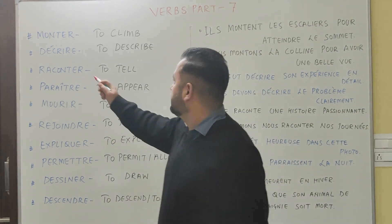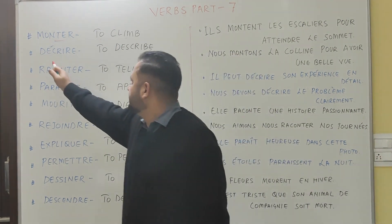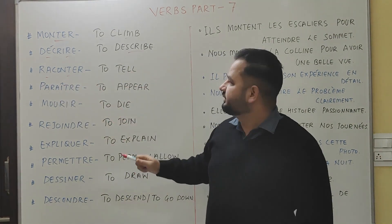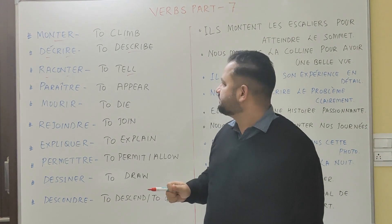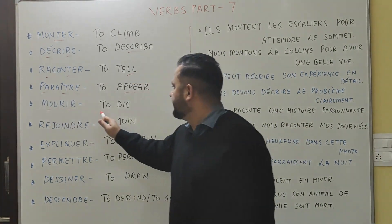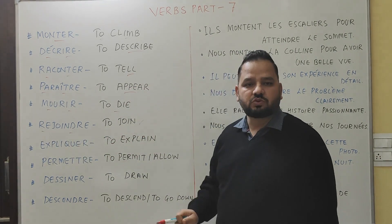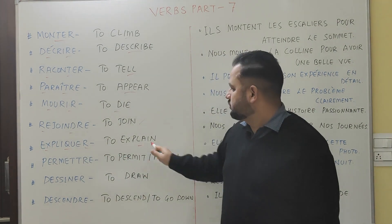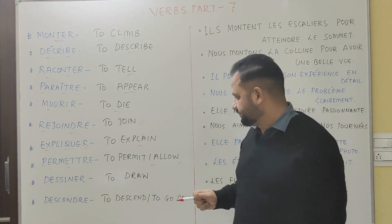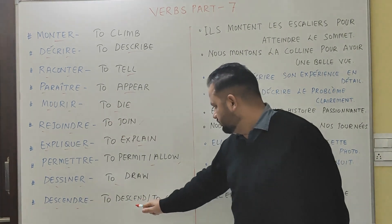The first verb is 'monter' - to climb. 'Décrire' - to describe. 'Raconter' - to tell. 'Paraître' - to appear. 'Mourir' - to die. 'Joindre' - to join. 'Expliquer' - to explain. 'Permettre' - to permit or to allow. 'Dessiner' - to draw. 'Descendre' - to descend or to go down.